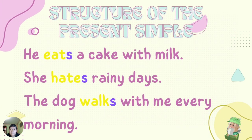Here we have more examples. He eats a cake with milk — the base form is 'eat,' but in the third person we add S: 'eats.' She hates rainy days. The dog walks with me every morning. In these verbs we add S for the third person of the singular: 'hates,' 'walks.'